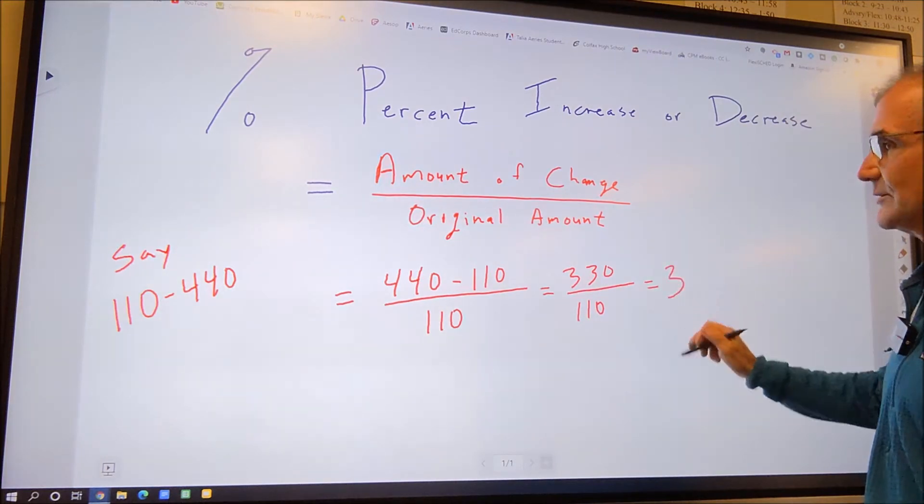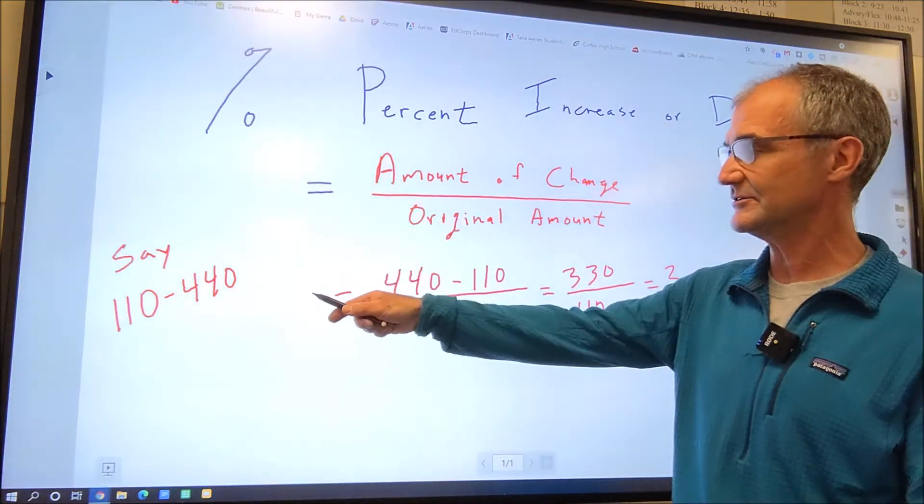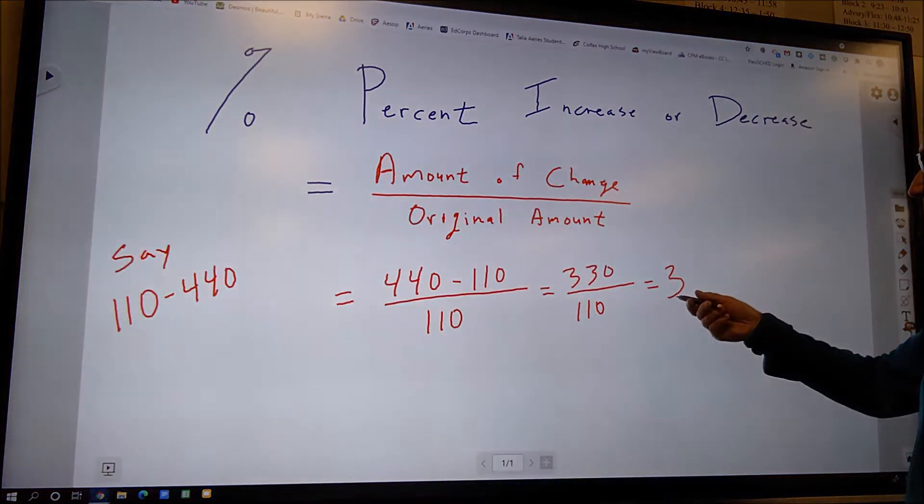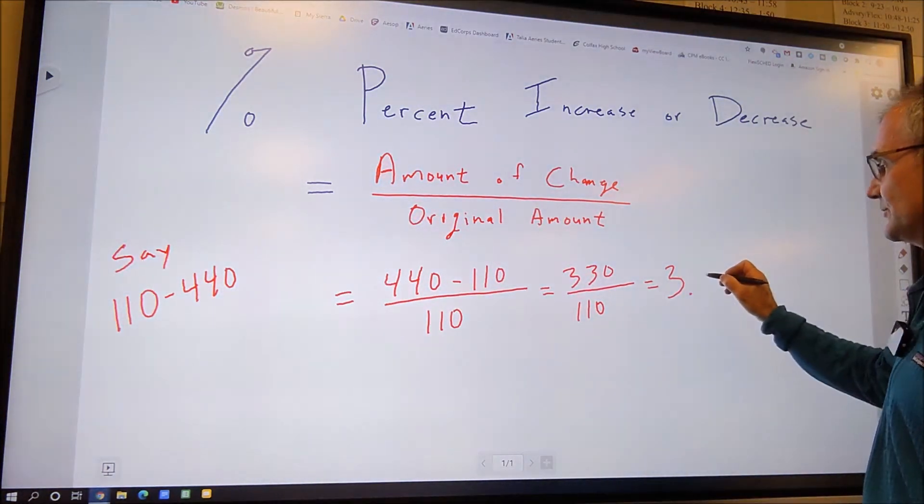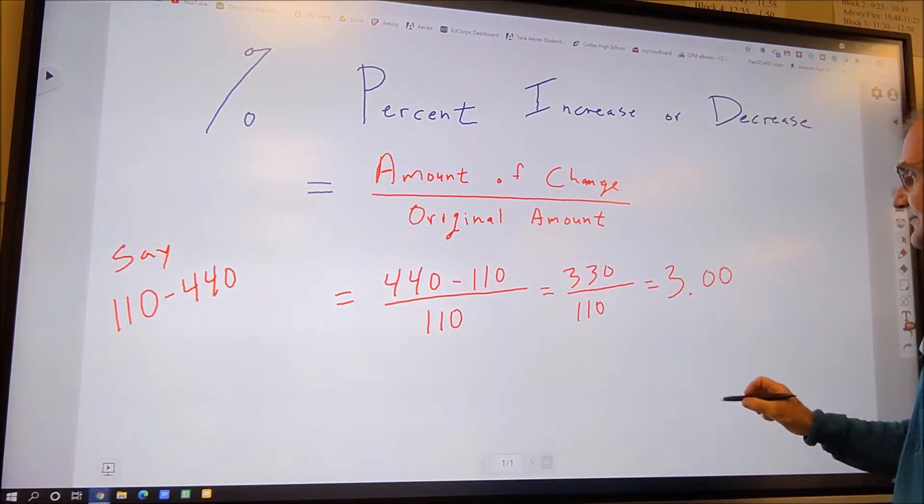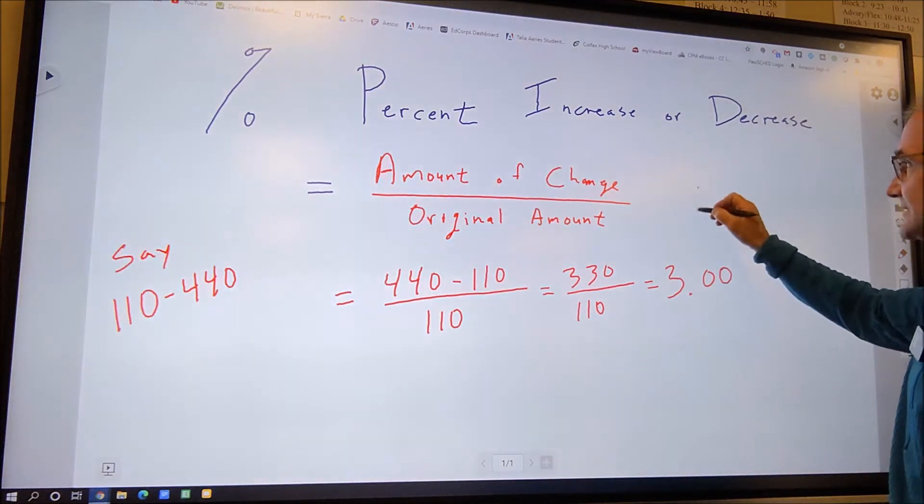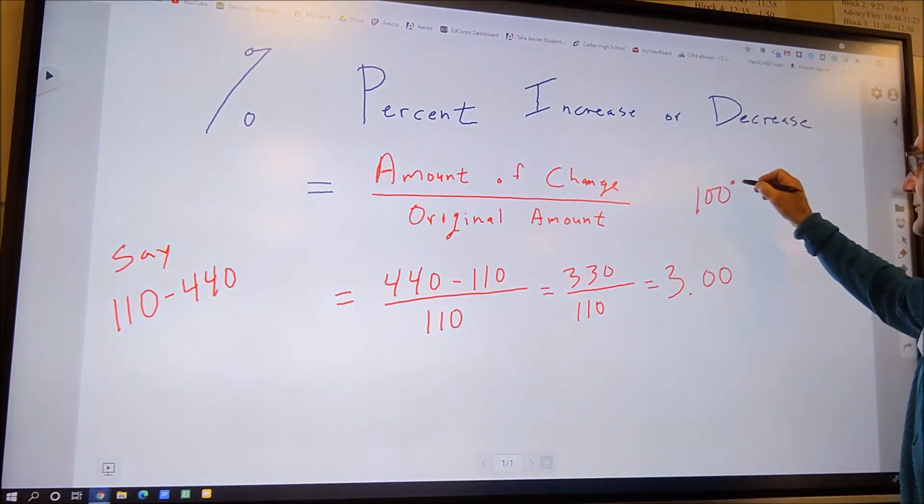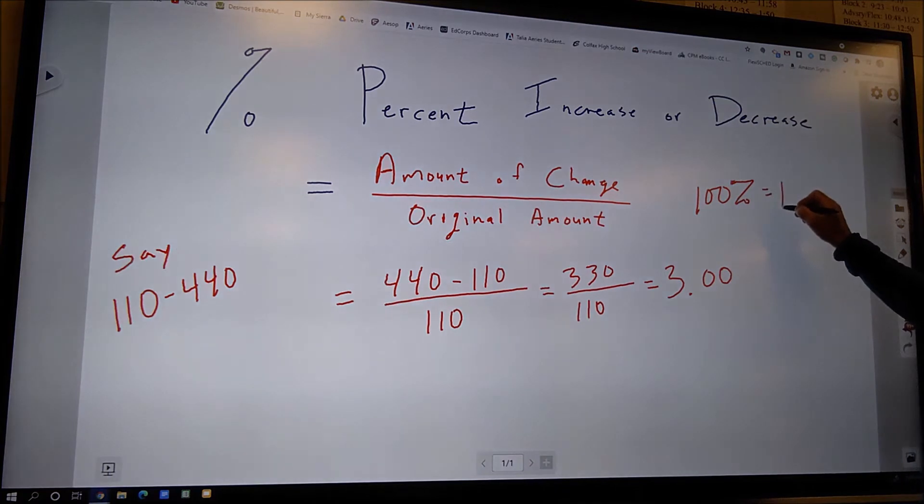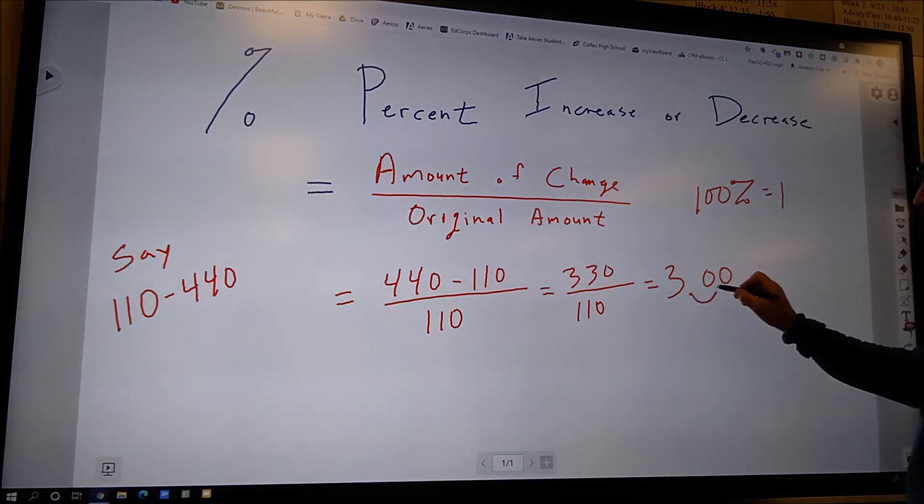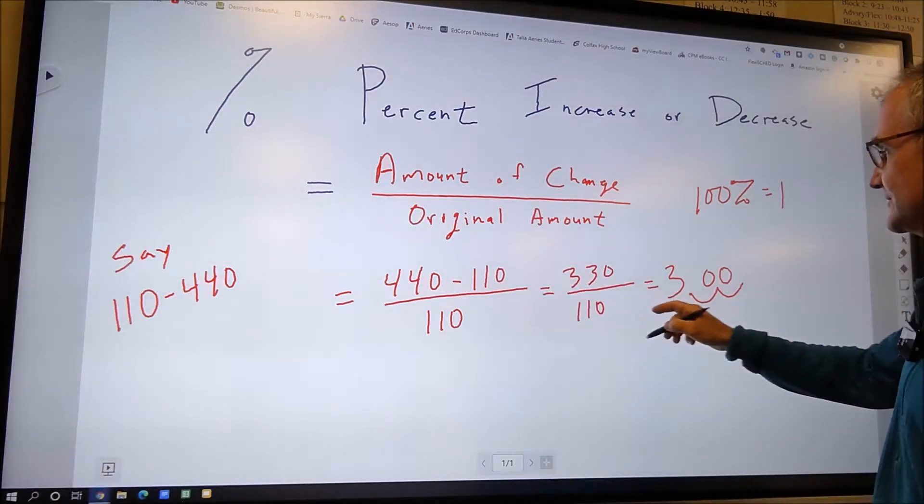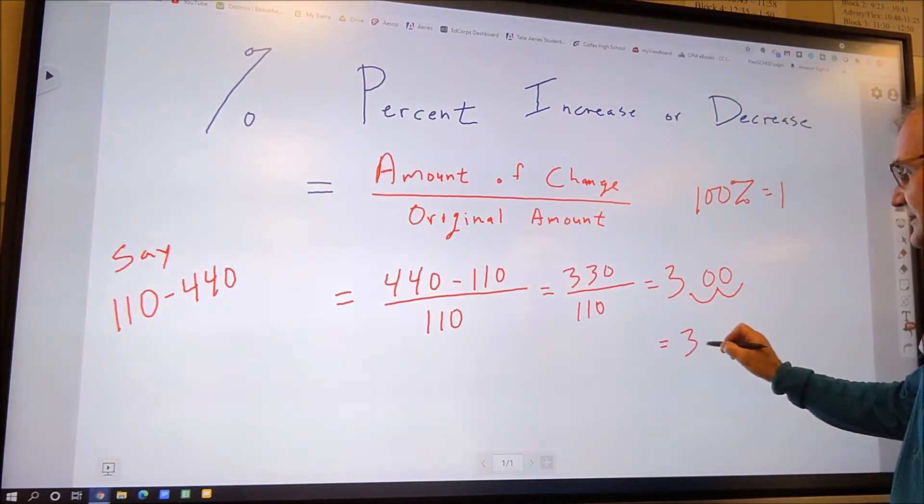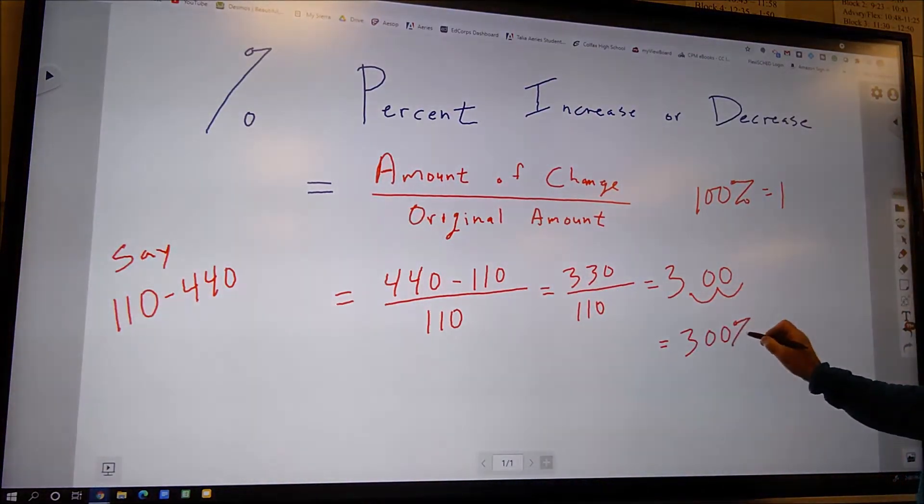But we're talking about the percent increase. So the number 3 is the same really as 3.00, and to make it into a percent, 100% is equal to 1, I move it over 1, 2 places. So the percent increase is 300% increase.